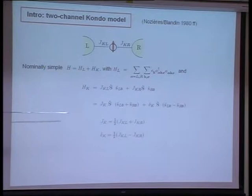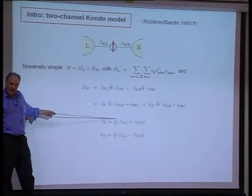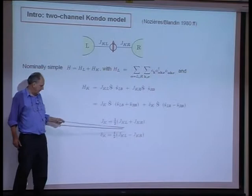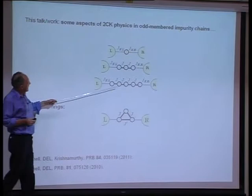It's also important to look at the case where JK left is not equal to JK right, where the spin couples differentially to the left and to the right side. As a piece of notation, one tends to write this as a channel-symmetric contribution, where JK is one-half the sum of JK left plus JK right, plus an anisotropic contribution involving delta K equal to one-half the difference between JK left and JK right.